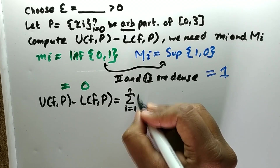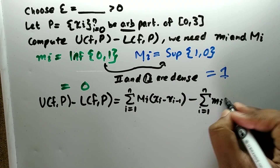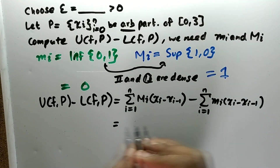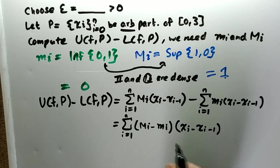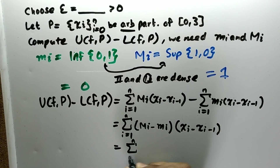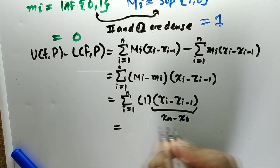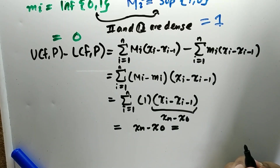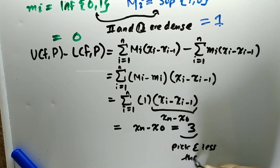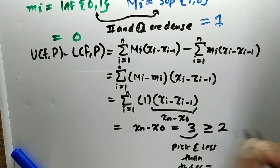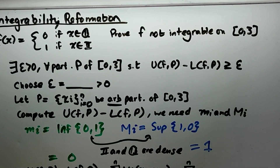The upper sum minus the lower sum equals the summation from i=1 to n of (M_i - m_i) times (x_i - x_{i-1}), which simplifies to (1 - 0) times (x_i - x_{i-1}). Using the same telescoping argument, this equals x_n minus x_0 = 3. Now we just choose an epsilon less than or equal to 3 — let's pick epsilon equals 2. Fill that in above and the proof is complete.